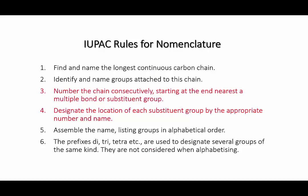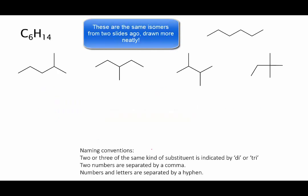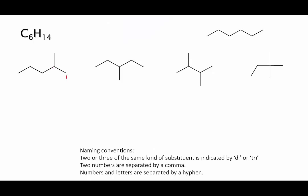You can see that number three on our list of rules is to number the chain consecutively, starting at the end nearest a multiple bond or substituent group. So we're going to number the carbons in the main chain. And then rule number four, you designate the location of each substituent according to the number of the carbon that it's attached to. So let's try this out. So let's look at the two methylpentanes first. The rule said to number the main chain consecutively, starting at the end nearest the substituent. So we'll number the carbons in the first one like this. And that means you can see that the methyl is attached to carbon number two. So the way we name this is two hyphen methylpentane. And that tells you that the methyl branch, the methyl substituent, is attached to carbon number two of the main chain, which is pentane.